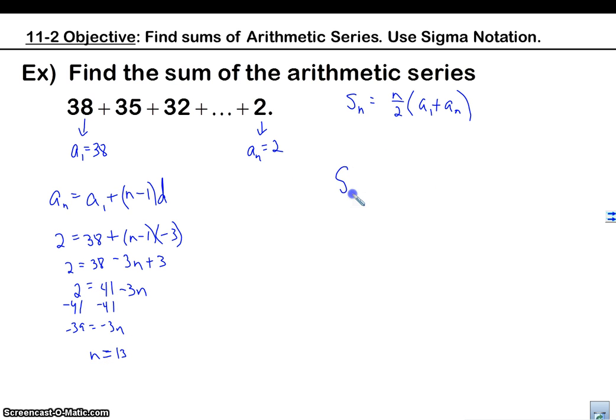So now we can plug in. S_n equals 13 over 2 times a_1, which was 38, plus a_n, which is 2. So we get 13 over 2 times 40. 2 goes into 40 twenty times. 20 times 13 is 260, I believe. Okay. All right. Let's move on.